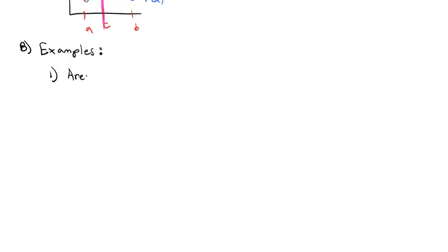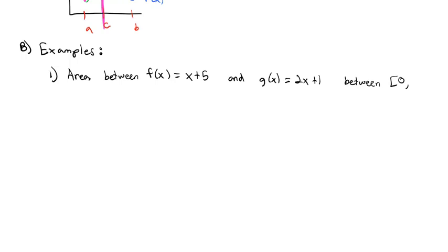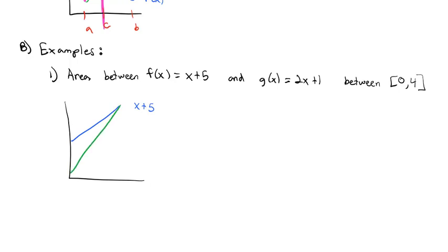Let's start with a simple one. We're going to find the area between f of x equals x plus 5 and g of x equals 2x plus 1, and we're only going to be interested in the values between 0 and 4. So x plus 5 is the first function, and 2x plus 1 has a lower y-intercept but it's steeper.